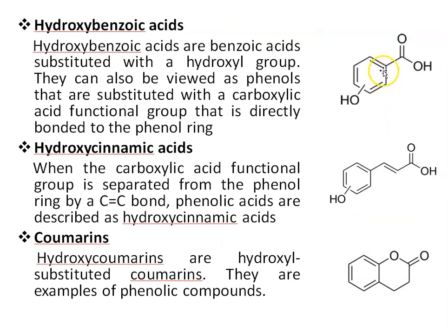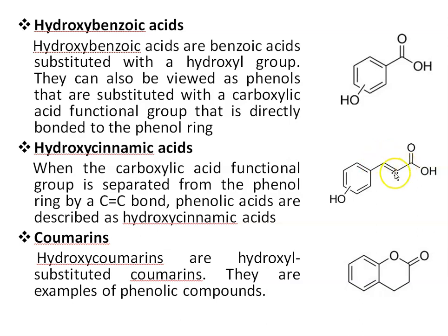Looking at the structures: hydroxybenzoic acids are benzoic acids substituted with a hydroxyl group — the carboxylic acid functional group is directly bonded to the phenol ring. Hydroxycinnamic acids are those where the carboxylic acid functional group is separated from the phenol ring by a carbon-carbon double bond. Additionally, hydroxycoumarins are hydroxyl-substituted coumarins, and they are also examples of phenolic compounds.